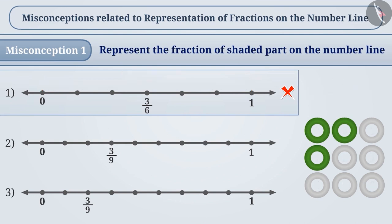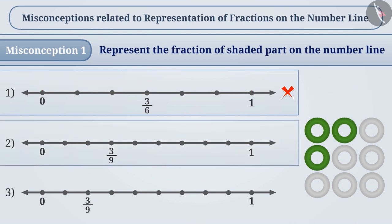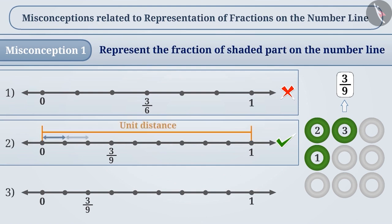The correct answer is option 2 because here the shaded parts are 3 out of 9. So the fraction will be expressed as 3 by 9. To represent this on a number line, the unit distance is divided into 9 parts, out of which 3 parts are taken to mark the fraction correctly.